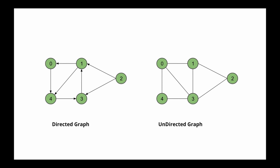On the other hand, an undirected graph is a graph whose edges are bi-directional — that is, they point both ways. Node 0 points to node 1 and node 1 in return points back to node 0. Node 1 also points to node 3 and node 3 points back to node 1. Node 2 points to node 1 and node 3, and node 1 and node 3 in return point back to node 2. That is what is meant by bi-directional.